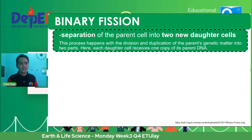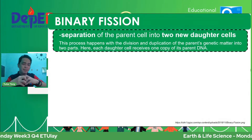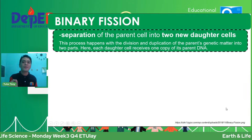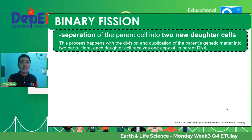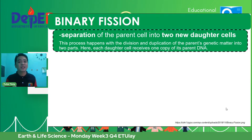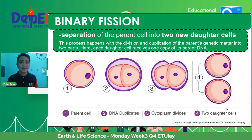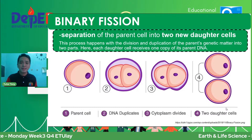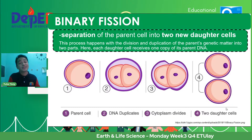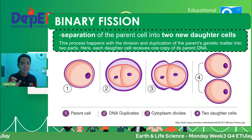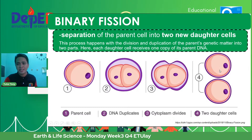Next, we have binary fission. Binary fission means the separation of the parent cell into two daughter cells — fission means to divide into two. Like other forms of asexual reproduction, the offspring carries the same genetic material as the parent DNA. Are you familiar with yeast? The baker's yeast used to make dough rise — they are fungi. In binary fission, the DNA duplicates first, then the plasma divides, and eventually we have two cells. Actually, the process is very fast.